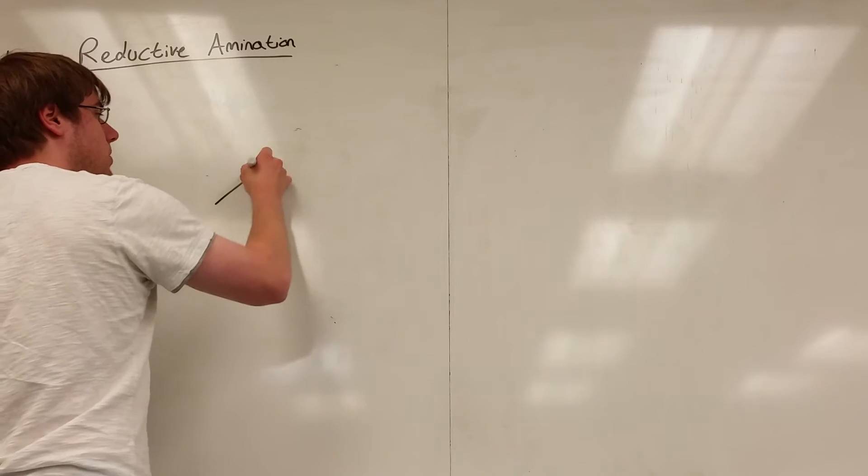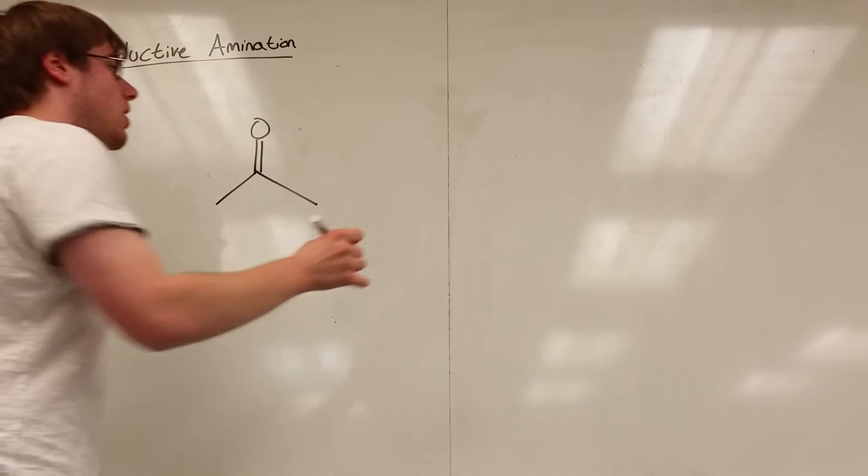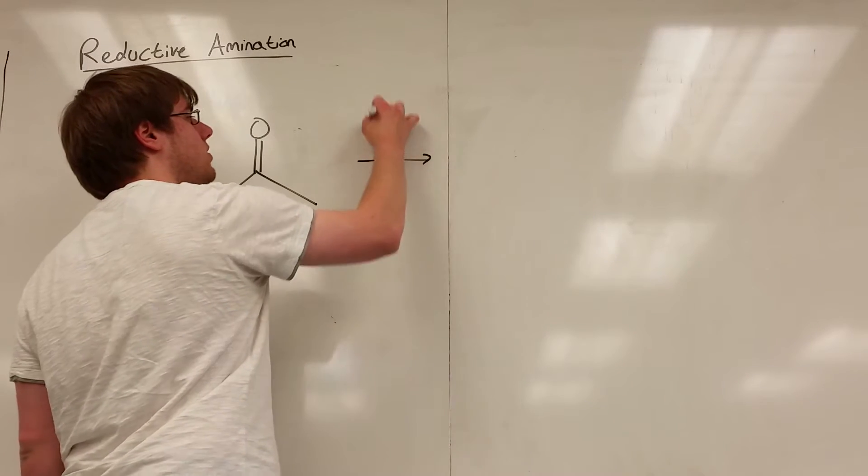Well the way reductive amination works is you're going to start with a carbon-oxygen double bond and over the arrow you're going to have some kind of nitrogen.